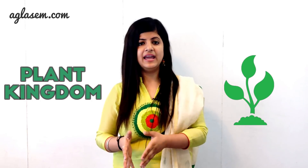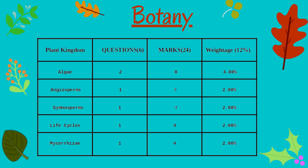Next is Plant Kingdom, where the important topic with more weightage is Algae — around 8 to 10 marks come from this chapter alone. The other topics carry equal weightage. The unit name is Plant Kingdom, with a total of 6 questions and marks weightage of 24. Topics are: Algae (2 questions, 8 marks), Angiosperm (1 question, 4 marks), Gymnosperm (1 question, 4 marks), Life Cycles (1 question, 4 marks), and Microsporogenesis (1 question, 4 marks). That covers the topics carrying 24 marks.